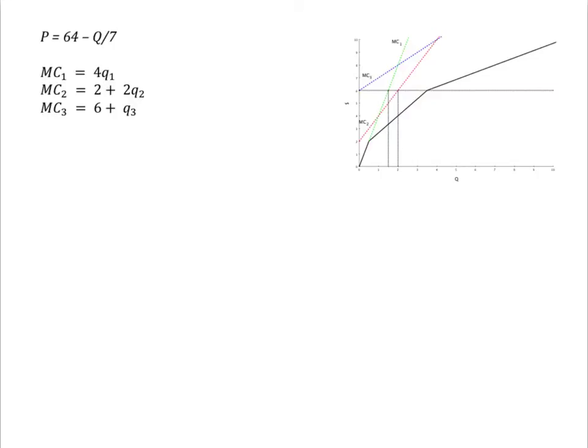To trace out the total quantity the firm is willing to provide as marginal revenue rises, we need to solve for Q at each plant. For example, Q1 is equal to one-fourth of marginal cost.